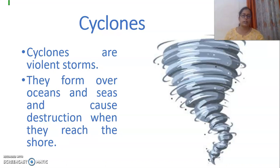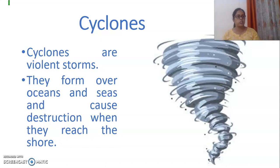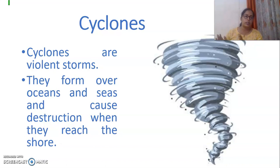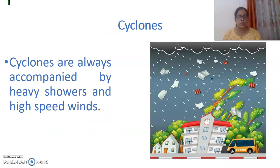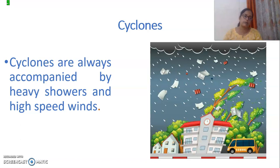Cyclones are violent storms and they form over oceans and sea. Whenever they reach the shore, they cause a lot of destruction. Cyclones are always accompanied by heavy showers and high-speed winds.